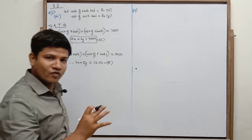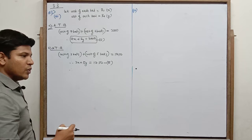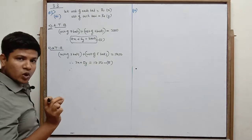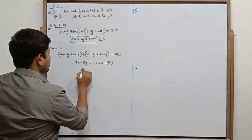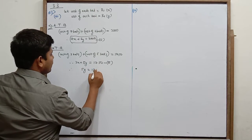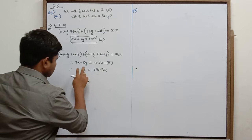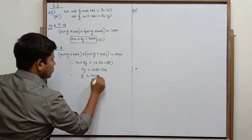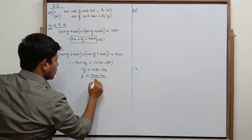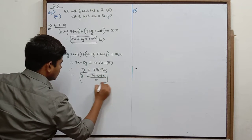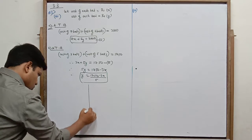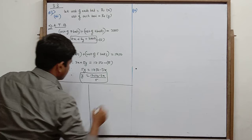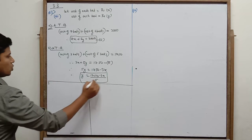We will solve this using the substitution method, as done in the first and second sums already. From equation 2: five y is equal to 1750 minus 3x, therefore y is equal to (1750 minus 3x) upon 5. We will carefully solve it. Call this equation 3.